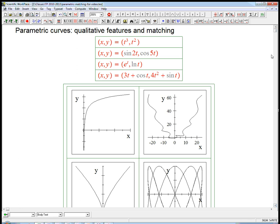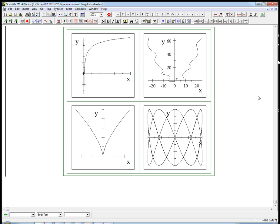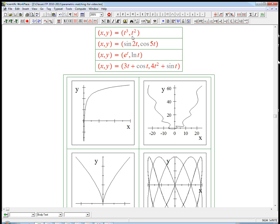One good way to do that is a matching problem. We're going to look at these four parametric equations: x equals t cubed, y equals t squared; x equals sine 2t, y equals cosine 5t; and these four possibilities. I've graphed those four, but I've shuffled the order. I want to talk about how you could do a matching problem like this, similar to the problem you'll have in the homework.